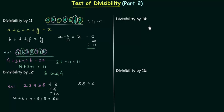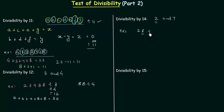Now we will move to divisibility by 14. A number is said to be divisible by 14 if it is divisible by both 2 and 7. For example, the number 28: at the units place we have 8, which is an even number, so 28 is divisible by 2. 28 is also definitely divisible by 7. Note there is no certain rule to check divisibility by 7. As 28 is divisible by both 2 and 7, it is also divisible by 14.